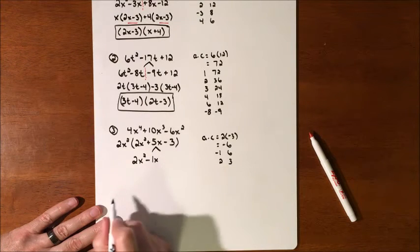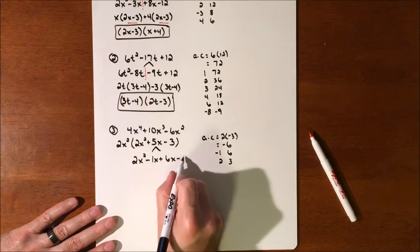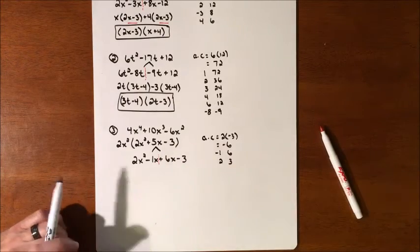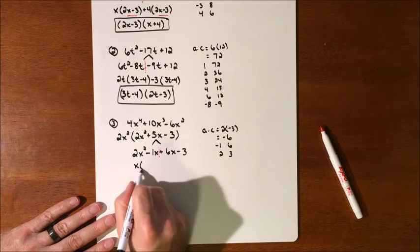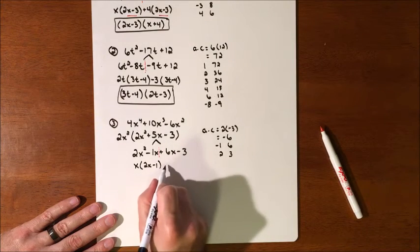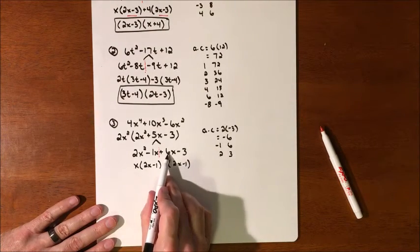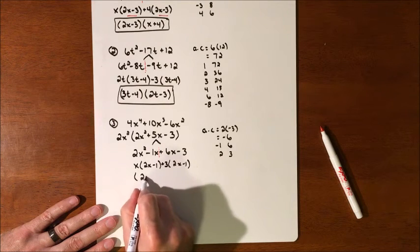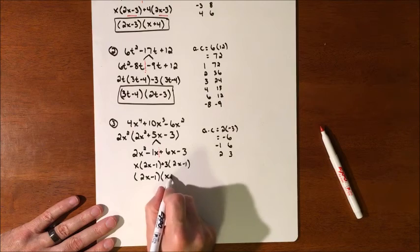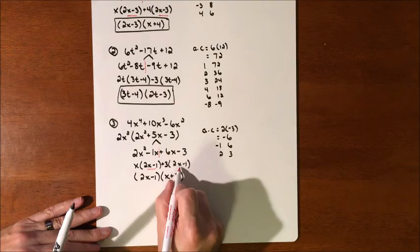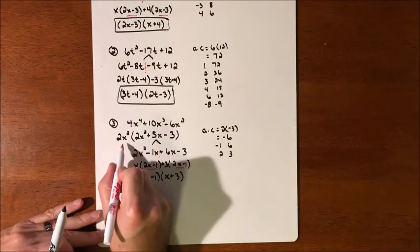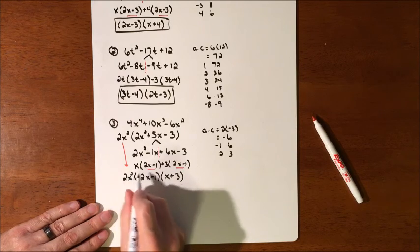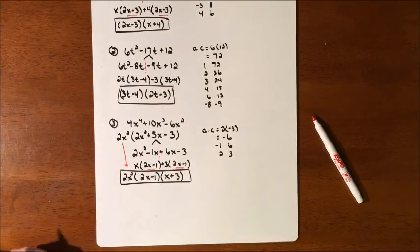So we separate the middle term: 2x² minus x plus 6x minus 3. Factor by grouping: from the first pair, factor out x, leaving 2x minus 1. We need another 2x minus 1, so from the second pair factor out a positive 3, giving 3 times (2x minus 1). Both groups share 2x minus 1, leaving x plus 3. Don't forget we factored out a greatest common factor of 2x² at the very beginning — that is still part of the answer, so don't lose it.